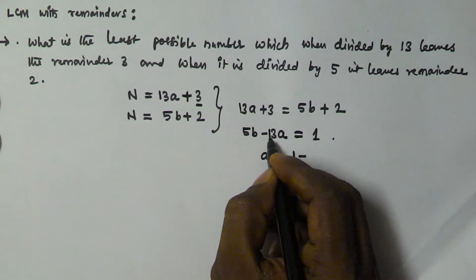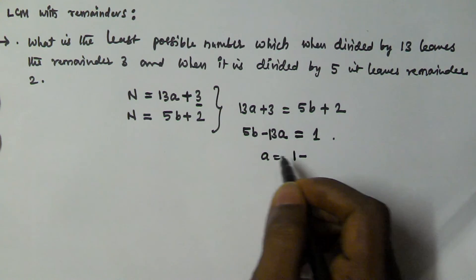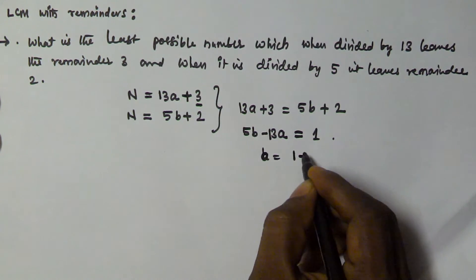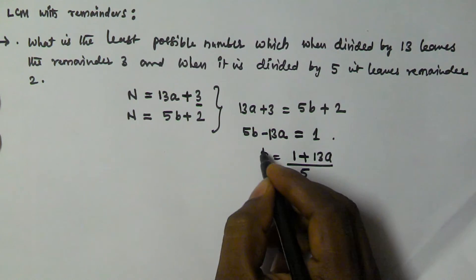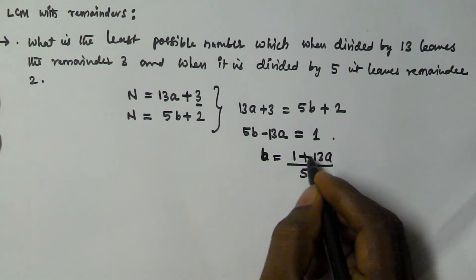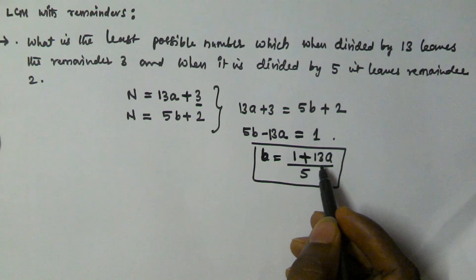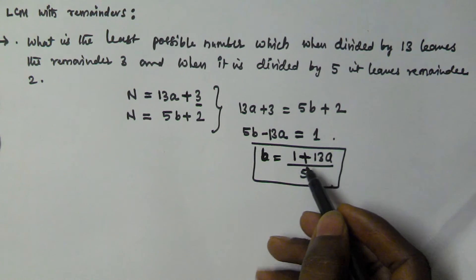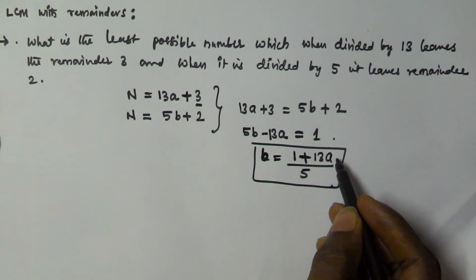From 5b - 13a = 1, we can write b = (1 + 13a) / 5. So b equals 1 plus 13a, divided by 5.